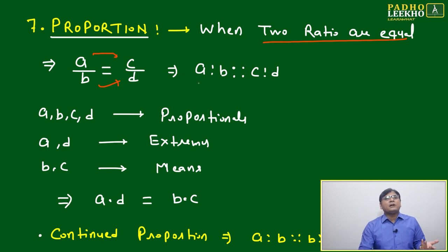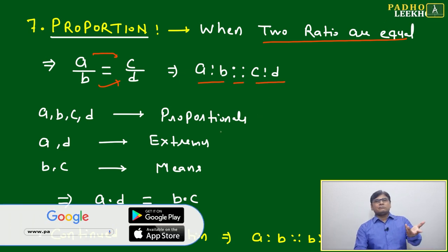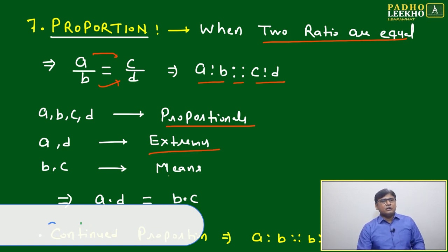Then only the ratios can be equal. We write a ratio b proportional to c ratio d, or read it as a is to b as c is to d. Here, a, b, c, d are called proportionals. a and d are extremes, b and c are means.